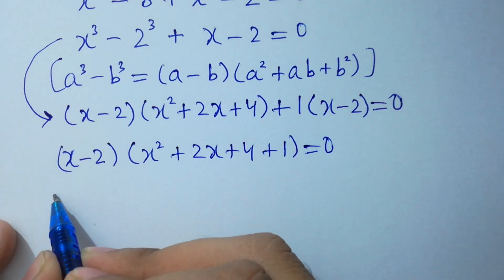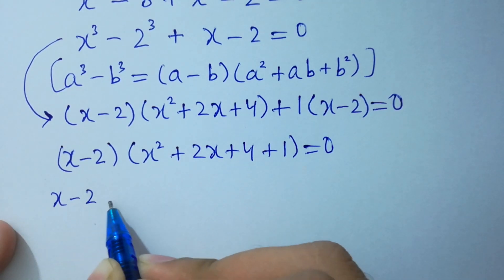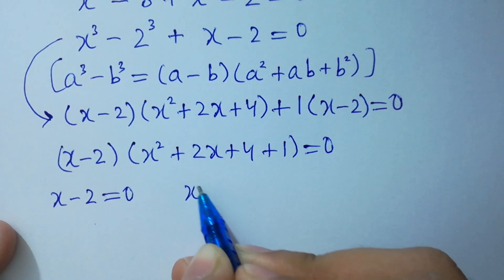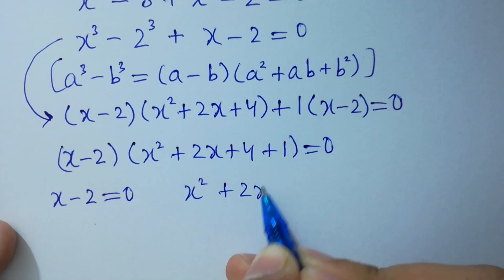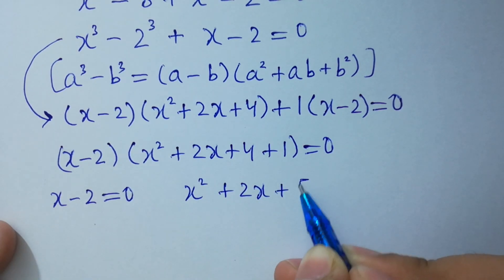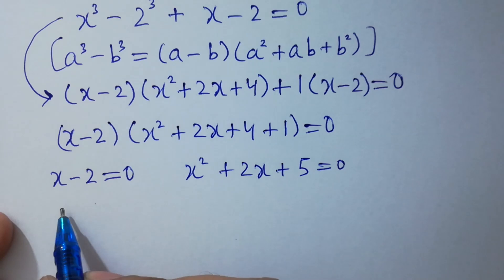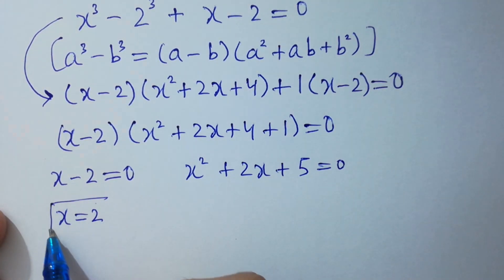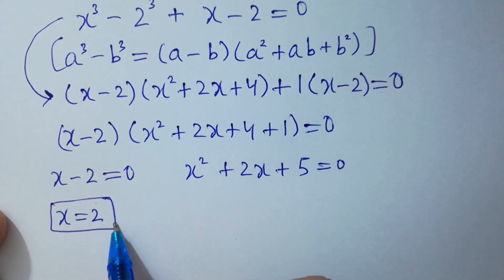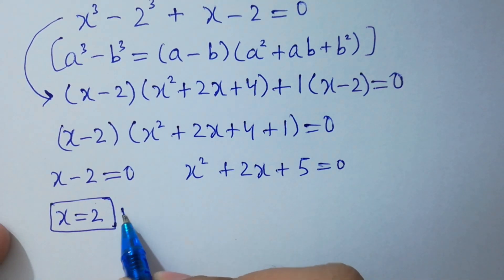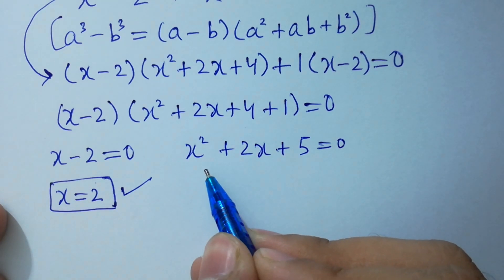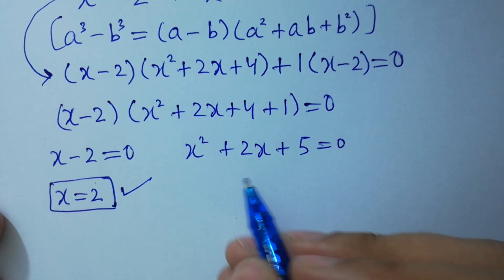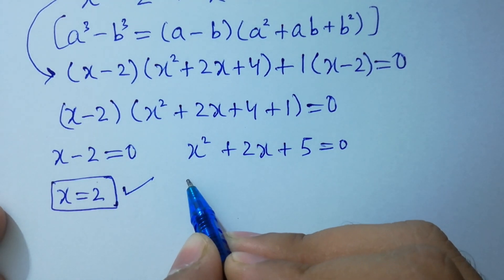We have x squared plus 2x plus 5 equals 0, and x minus 2 equals 0 gives us x equals 2, which is our real solution. The remaining quadratic equation is x squared plus 2x plus 5 equals 0.